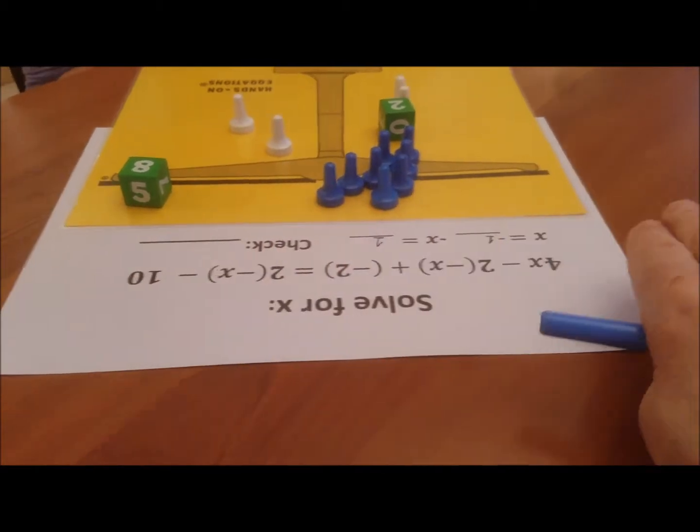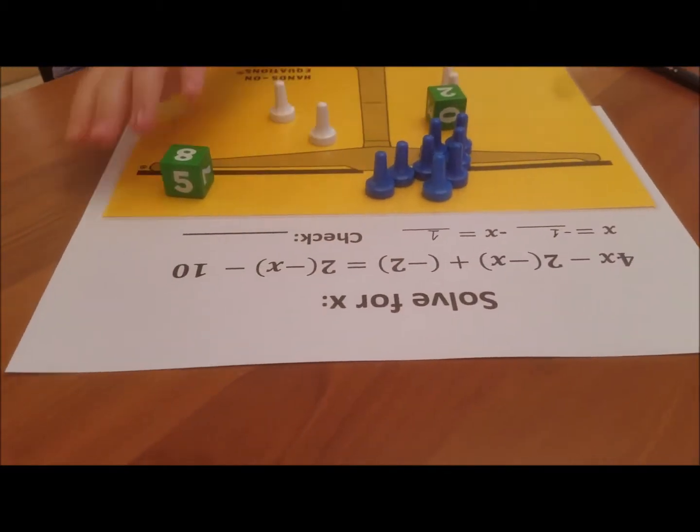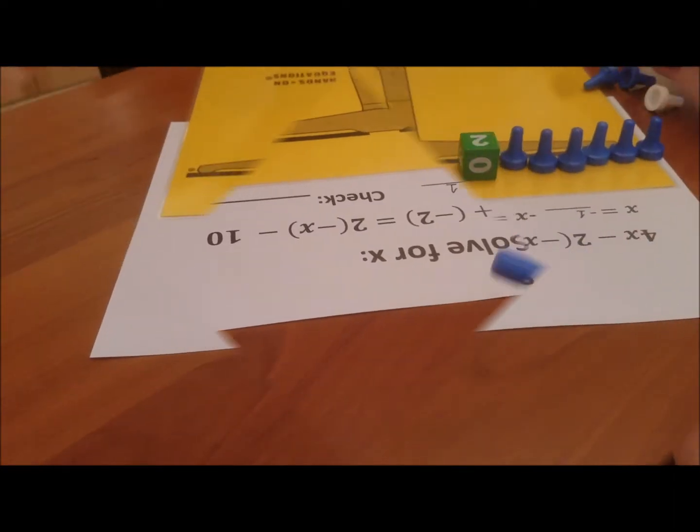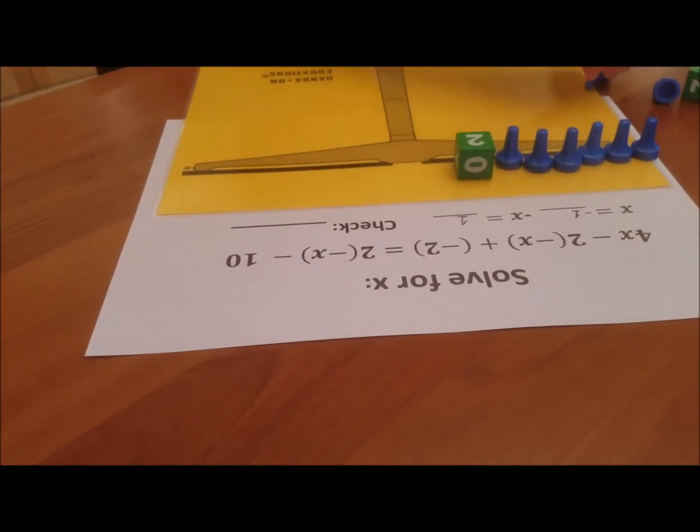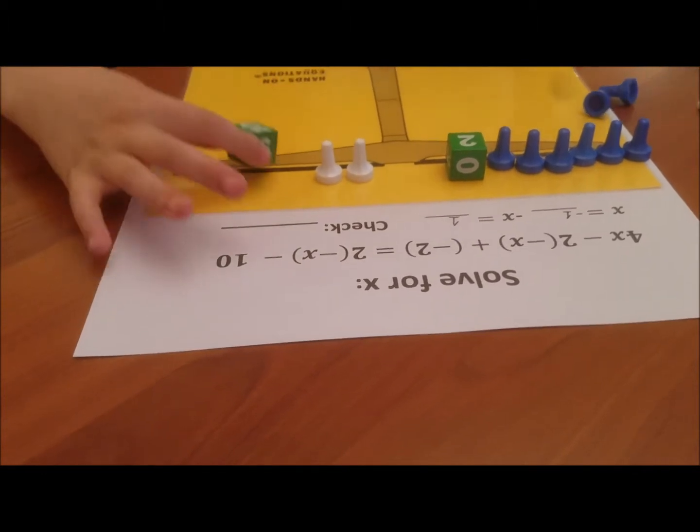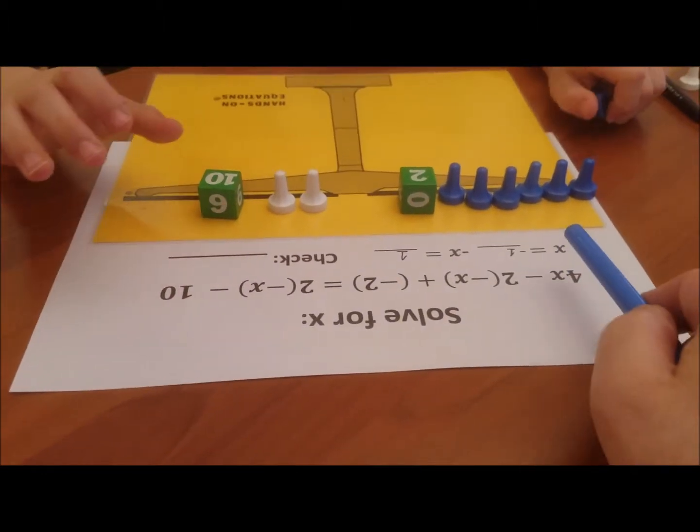Okay, now let's clear the scale. And let's set up the original problem one more time to see if the check works out. All of that is equal to twice the opposite of x and take away ten. Okay, so help me with the check now.